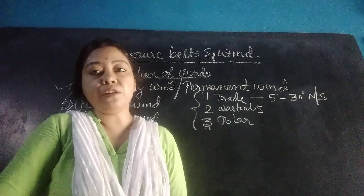Trade winds blow from the subtropical high to the equatorial low pressure belt in both hemispheres. The word 'trade' means track. The wind blows from the eastern direction and backing winds are present in the path of trade wind, which helps in the movement of ships.